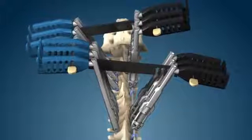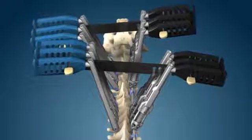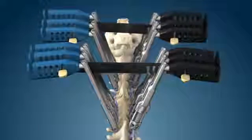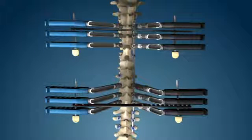The spine is derotated by slowly rotating the clusters in opposing directions over approximately 15 seconds. With the desired axial plane correction achieved, cluster alignment rods are inserted to hold the correction in place.